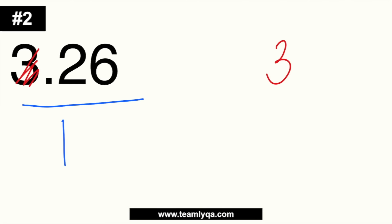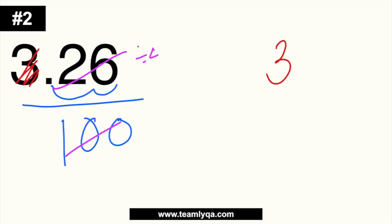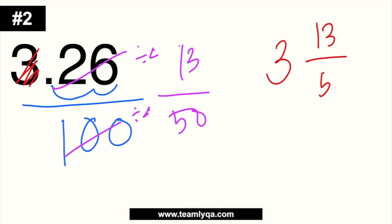Number 2: 3.26. Set aside the whole number 3 immediately — it goes straight into the final answer. Now just work with 0.26. Put 26 over 1, count two decimal places, add two zeros: 26 over 100. Divide by 2: 13 over 50. Since 13 and 50 share no common factor, the final answer is 3 and 13/50.